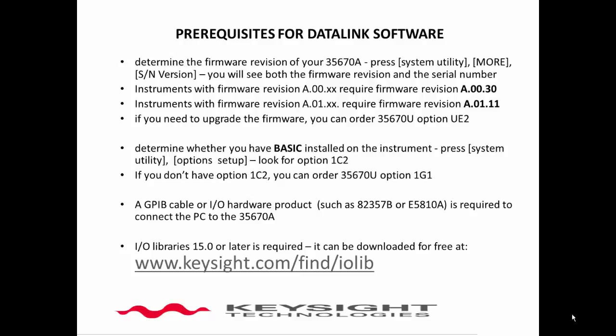The second prerequisite is that the instrument must have the basic option installed. In order to determine if the basic option is installed, push the System Utility hard key located under the display, then push the F5 key, which is next to the soft key labeled Options Setup. If basic is installed, you will see it listed as option 1C2. If you do not have basic installed, you can purchase it by ordering part number 35670U, option 1G1.